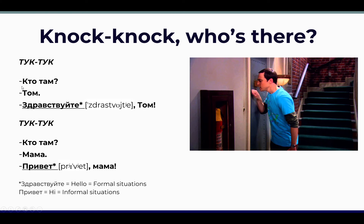Let's read. I will give you 30 seconds to read by yourself. К, Т, О, Т, А, М — Кто там? You see this question: Кто там? — Who is there? The answer: Т, О, М — Tom. Кто там? Tom.